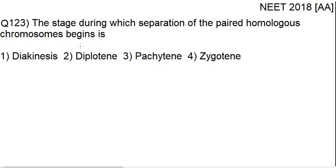The question is: the stage during which separation of homologous chromosomes begins. The options are: number one, diakinesis; number two, diplotene; number three, pachytene; number four, zygotene.